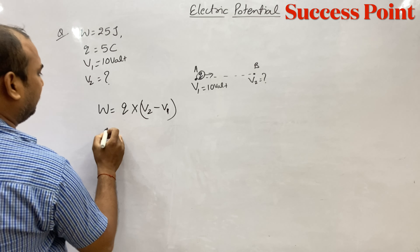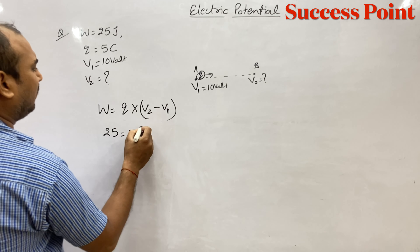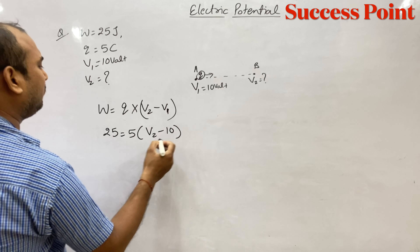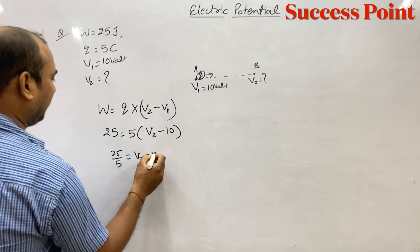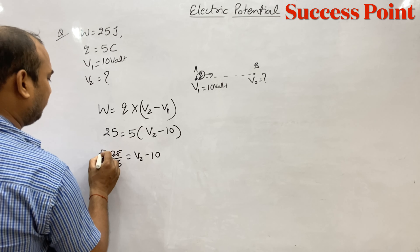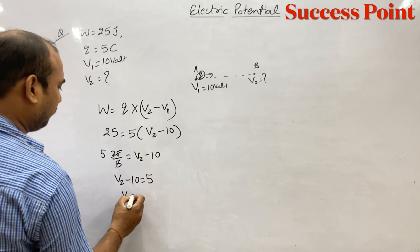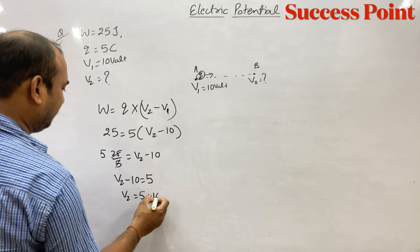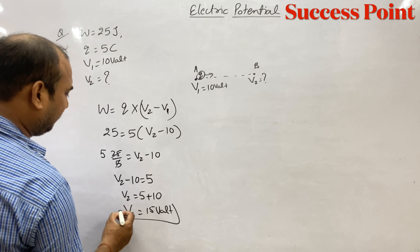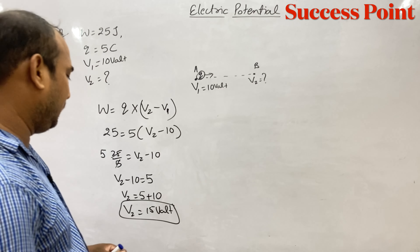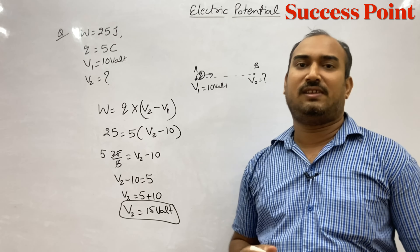Saari value put kar dijiye: W aapko diya hai 25 joule, Q diya hai 5 coulomb, into V2 minus V1. V1 ki value 10. So 25 divided by 5 equals V2 minus 10. That gives 5 = V2 minus 10, so V2 = 5 + 10 = 15 volt. The potential of the second point will be 15 volt.